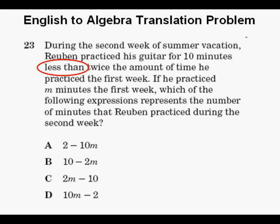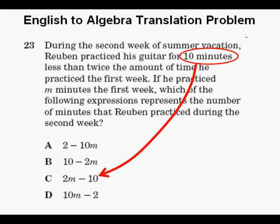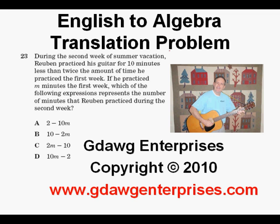So in this problem, we need to take this 10 minutes and subtract it from twice the amount he practiced the first week. Our answer is C. If you don't think it through carefully, you might be tempted to pick answer B, which does not switch the order. This has been an English to Algebra translation problem. Thanks for viewing.